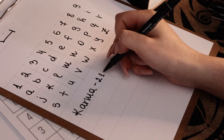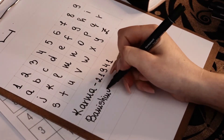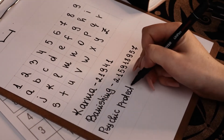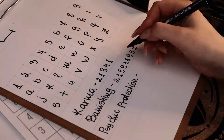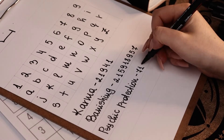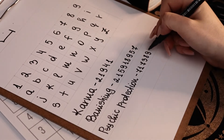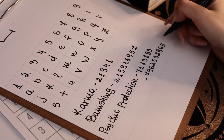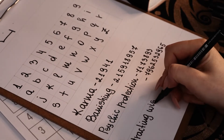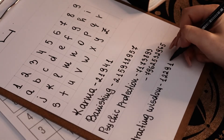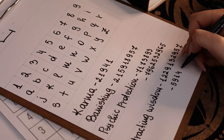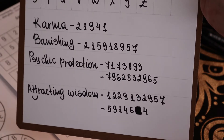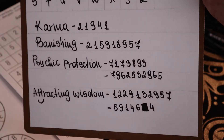I will create four sigils as examples for this video. The first word is karma, which is simple and not too long. Then we have banishing, which is a bit longer. Then we have psychic protection — two words — so you can see how to link them together in a sigil. And the last is attracting wisdom, which has a double letter in the word attracting. After choosing your words, you write the numbers that correspond to each letter. I made a small mistake and scratched it out — I hope that doesn't bother you.